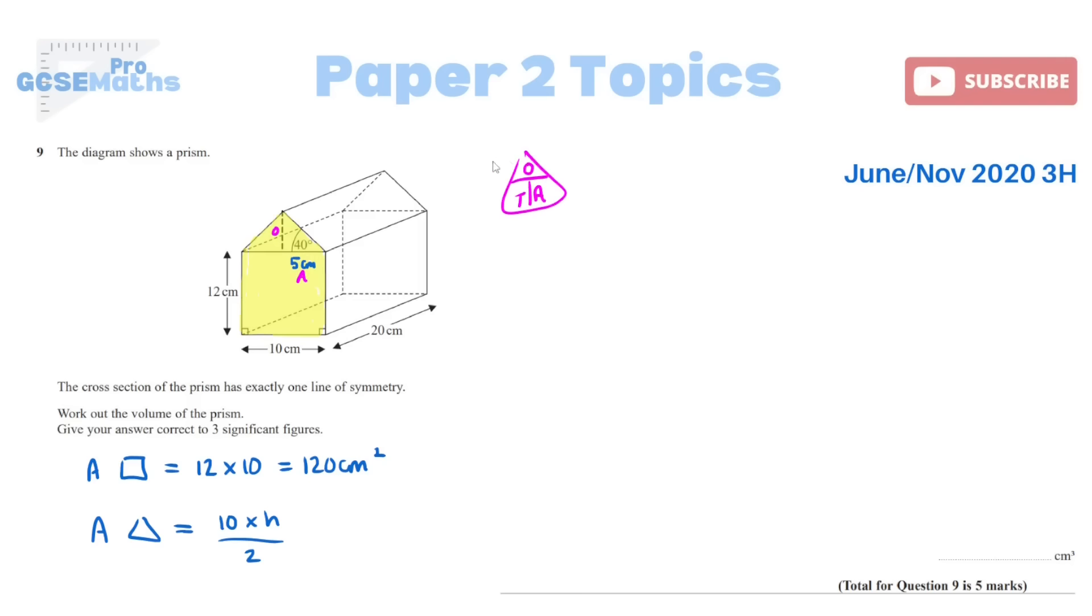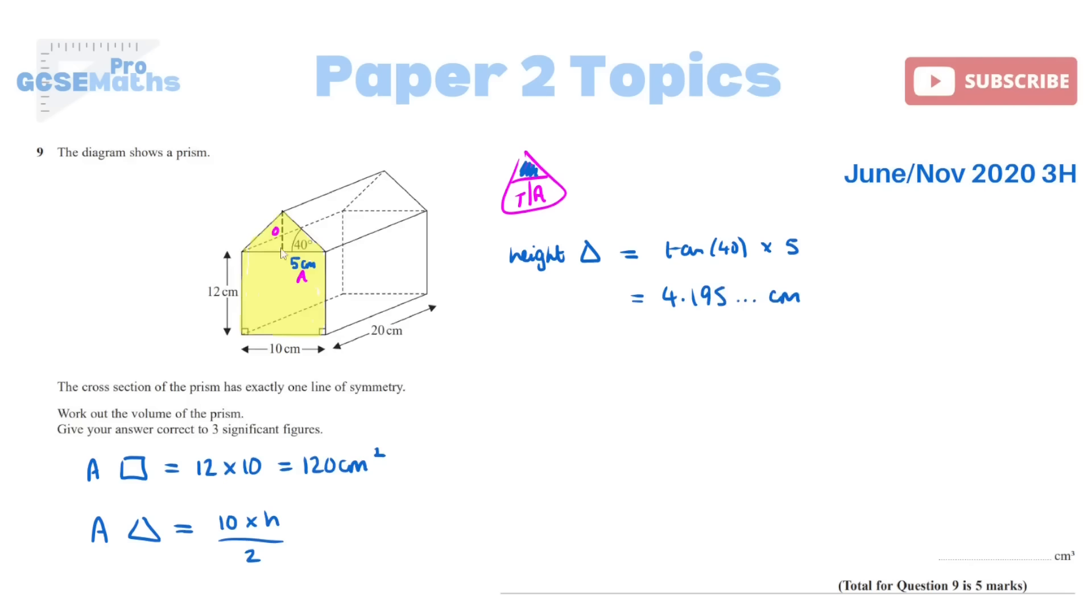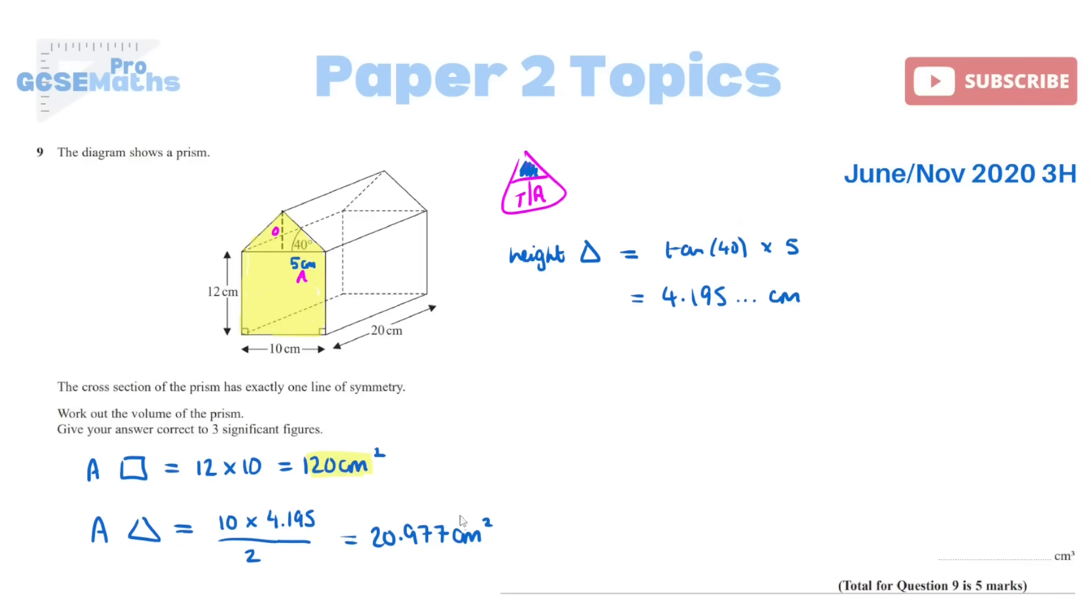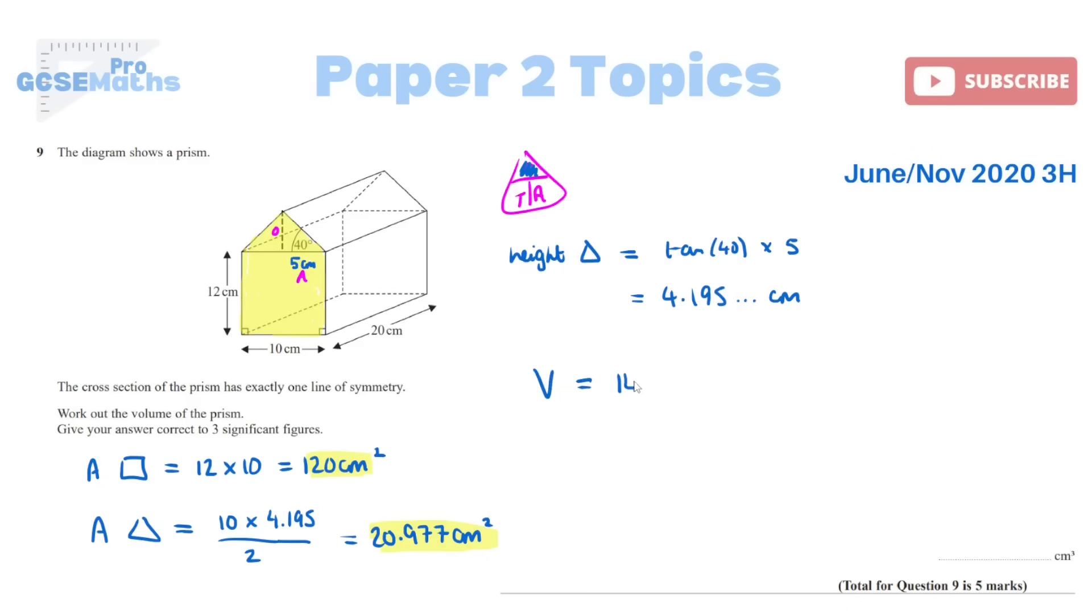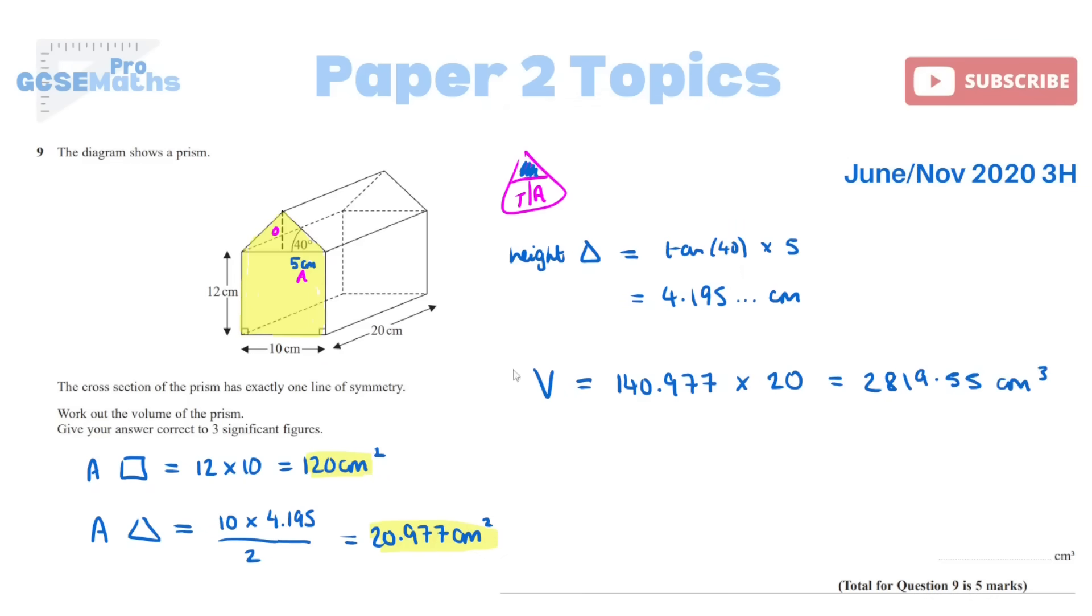So I get my formula triangle. Because I'm looking for the opposite, cross that one out. So it tells me to find the height of the triangle, I need to do tan, obviously of the angle 40, multiplied by the adjacent, which was 5, which gives me 4.195. So that's now the height. Come back to my actual formula. Now I can work out the area of the triangle as a whole, 20.977. So the whole area, the whole cross-section is both of these added together, which gives me 140.977. So the volume would be 140.977, which is my total cross-section area, multiplied by length, 2,819.55. I want to round it to three significant figures, which would be 2,820 centimetres squared.